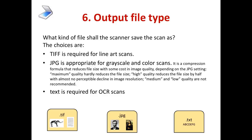The sixth thing you should control with your scanner software is the output file type — what kind of file should the scanner save the scan as? Your choices are TIFF, which is required for line art. JPEG can be used for grayscale and color, and it's appropriate for those. The JPEG is really a compression formula that reduces the file size with some small cost in image quality — not much cost at the high-quality setting. So I recommend using JPEG for images. And for OCR scanning — optical character recognition scanning, which converts to text in one step — that has to be a text file.